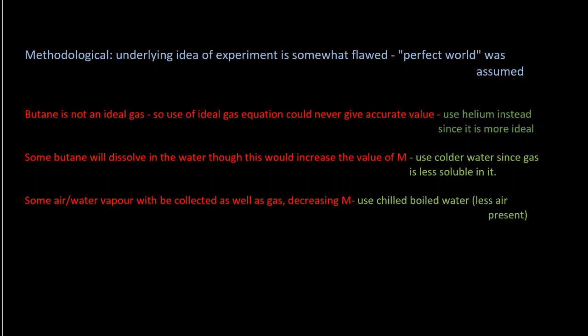Using colder water would reduce butane gas dissolving, since gas dissolves better in hotter water than colder water. We also talked about how air or water vapour could be collected along with the butane, which would decrease the value of M. To reduce that error, use chilled water so less gas escapes from the water, and use water that's been boiled because boiling removes the dissolved air. And we're done.